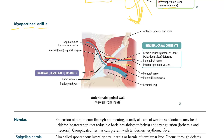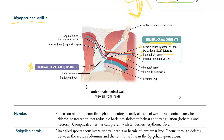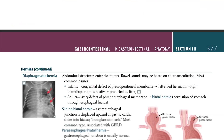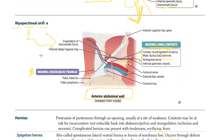What is the myopectineal orifice? You have the inguinal (Hesselbach's) triangle, and you also have the inguinal canal contents. The inguinal canal contents include: the round ligament in females, the ductus deferens in males, the ilioinguinal nerve, and the internal spermatic vessels — all located at the anterior abdominal wall.